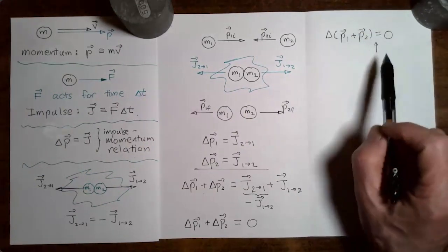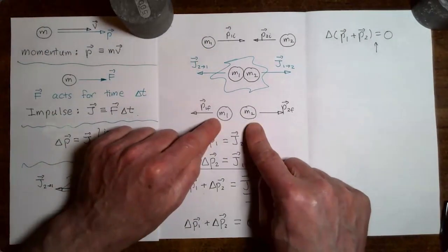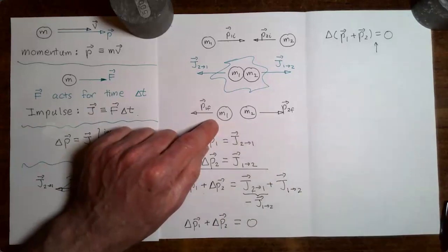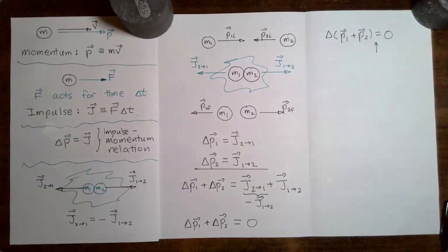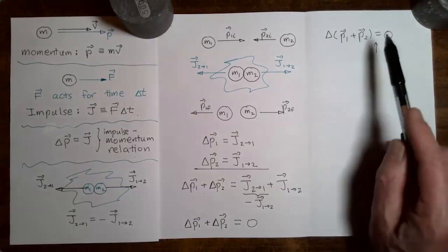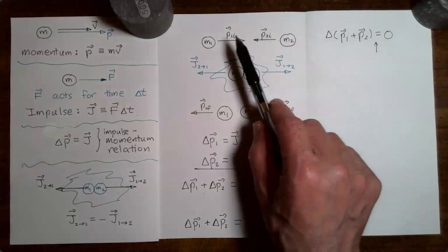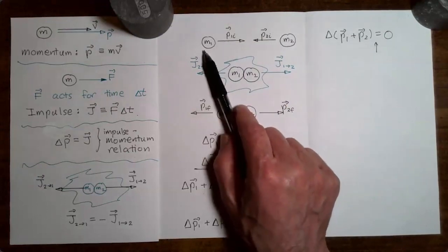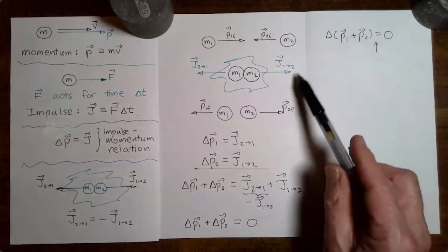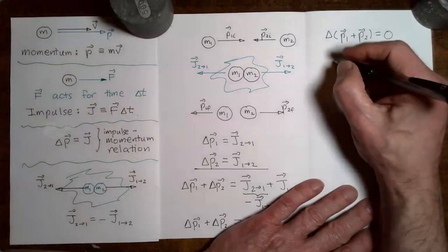What is this telling us? We had two masses come into the collision. Each of those masses experienced a change in its momentum — the momentum of mass one changed, and the momentum of mass two changed. But the total momentum of the combination did not change. All that happens during the collision is that one mass gives a certain amount of its momentum to the other mass. There is an exchange of momentum going from one mass to the other, but the combined momentum stays the same.